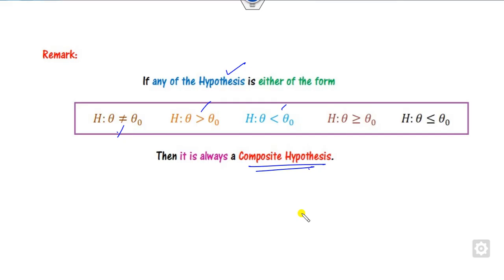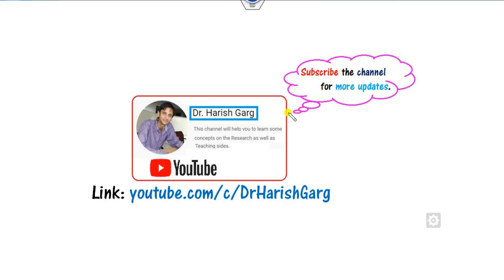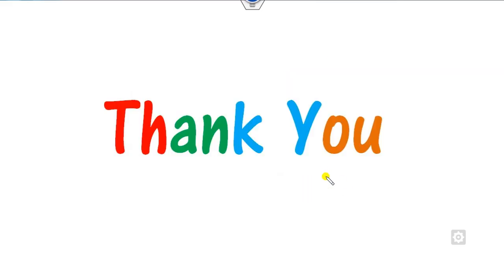This concludes the lecture on simple and composite hypotheses. In the next class, we will see how to define Type 1 and Type 2 errors. Till then, you can follow the link to find various videos. Best of luck, students.